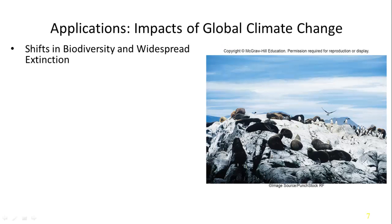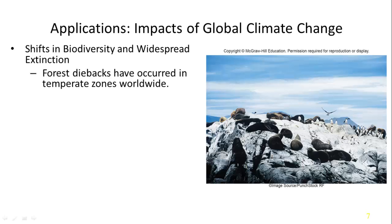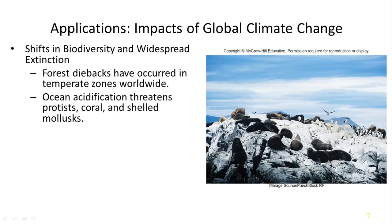Impacts of global climate change include shifts in biodiversity and widespread extinction. If we're shifting the temperature faster than species can adapt, they will start to go extinct. Forests have been pushed more northward and to higher elevations worldwide. Ocean acidification — the increase of carbon dioxide absorbed into the ocean making it more acidic — affects organisms dependent on calcium, a positive and basic ion. Increasing acidification decreases the ability to form calcium products, which form the shells of many bivalves and other mollusks.